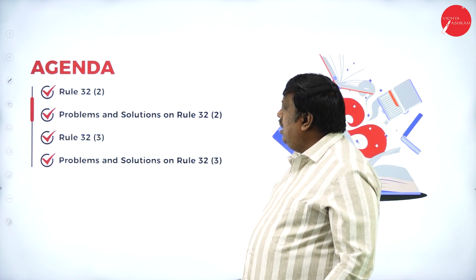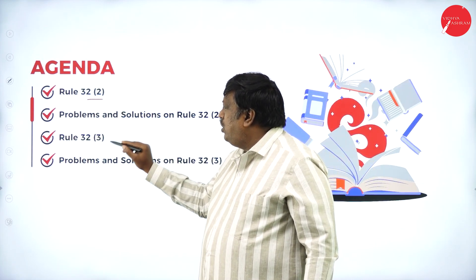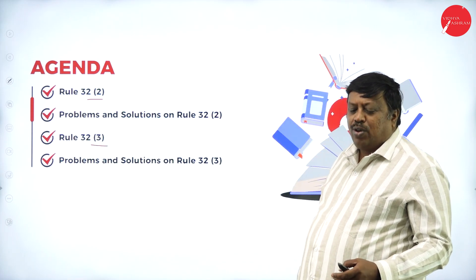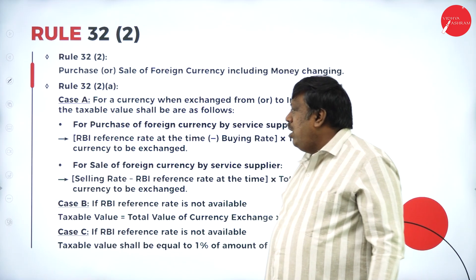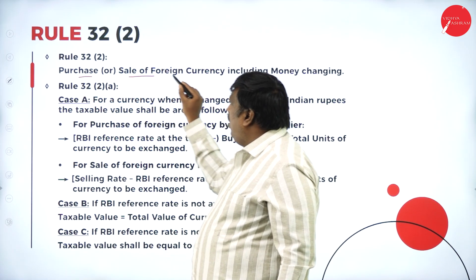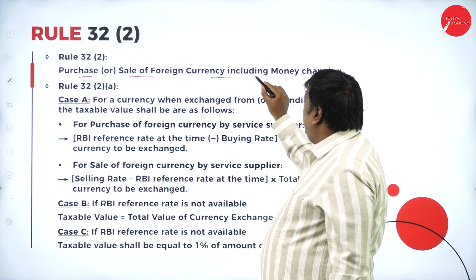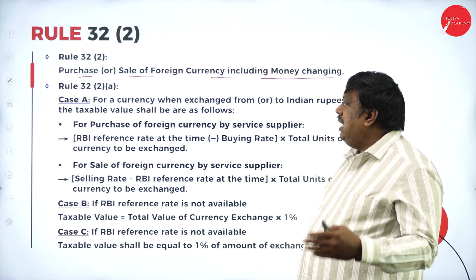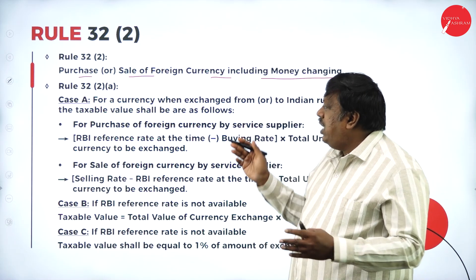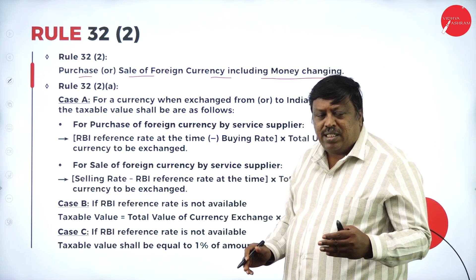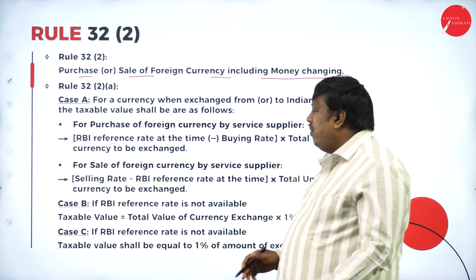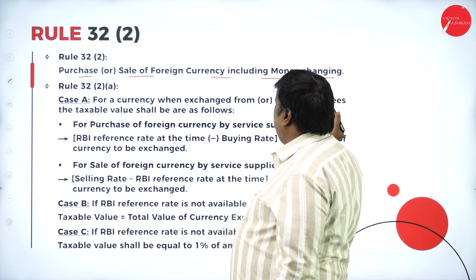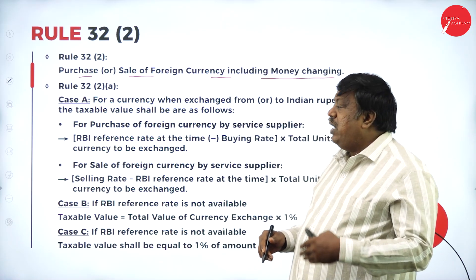In today's session we are going to solve problems on Rule 32 sub-clause 2 and sub-clause 3 — theoretical part as well as problems. Rule 32 deals with purchase or sale of foreign currency including money changing. The rule applies when we purchase or sell any foreign currency including money changing. Case A covers currency exchanged from or to Indian rupees — converting foreign currency to Indian rupees.